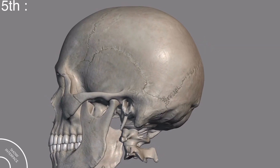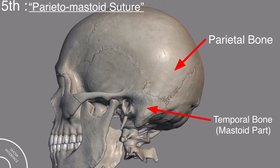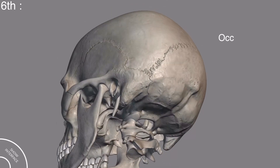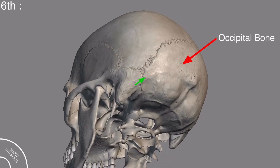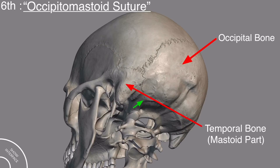The suture present between the parietal bone and the mastoid part of the temporal bone is called the parietomastoid suture. The suture present between the occipital bone and the mastoid part of the temporal bone is called the occipitomastoid suture.